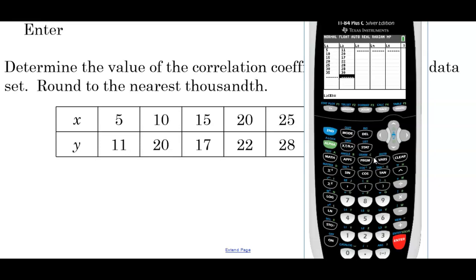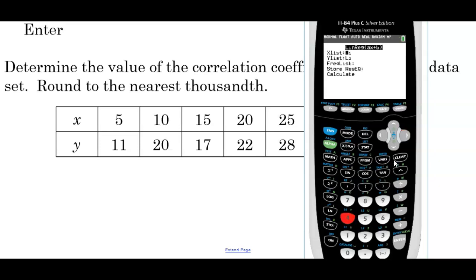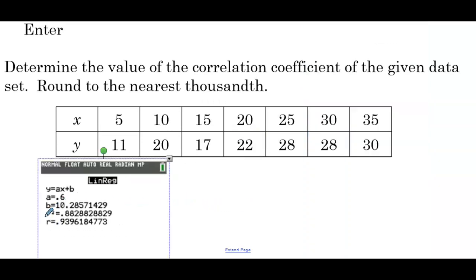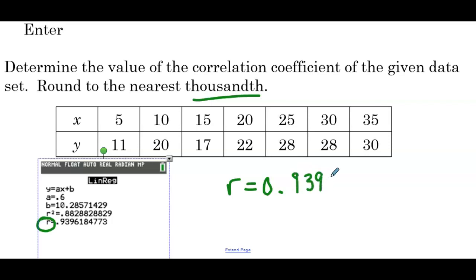We have the same number of entries, so we're good. Hit Stat, scroll over to Calc, choice 4, scroll down to Calculate, and hit enter. Now what you'll notice is we have two additional pieces of information that we did not have in the previous video — R squared and R. R squared is another statistic but we're not going to deal with that in this course. We're focused on R, which is our correlation coefficient.